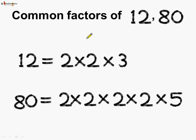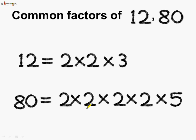Now let us find the common factors of 12 and 80. We found that 12 is equal to 2 multiplied by 2 multiplied by 3, and 80 is equal to 2 multiplied by 2 multiplied by 2 multiplied by 2 multiplied by 5. Which are the common factors here? We can see 2 and 2, so 2 and 2 are the common factors of 12 and 80.